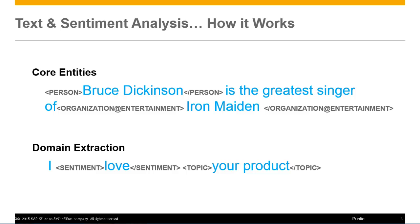If we look at the first element, which is referred to as core entities — looking at an example sentence, we can extract the person or identity and organizational information. We can extract entity types that support the who, what, when, and where, as well as how much or generic type concepts. Using the SAP HANA libraries, we are able to identify that, for example, the person from this sentence is Bruce Dickinson, who belongs to Iron Maiden, which is an entertainment type organization.